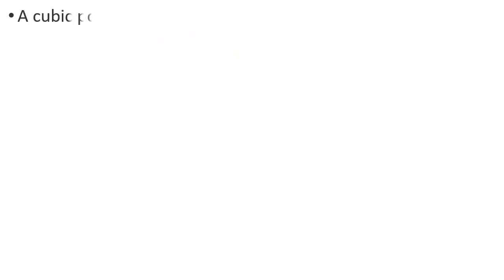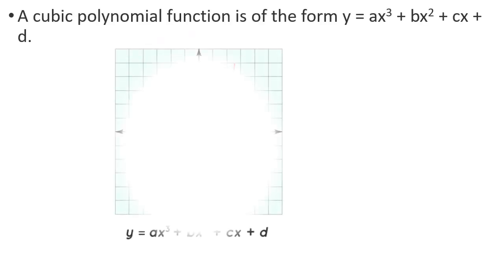Cubic polynomial: the graph is a cubic curve. For a cubic polynomial, we will consider 3 points of x, and for a degree-4 polynomial, we will consider 4 points of x.